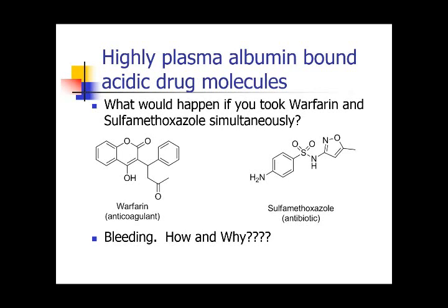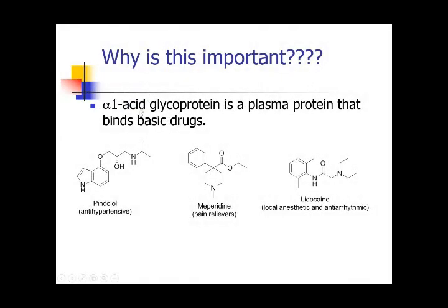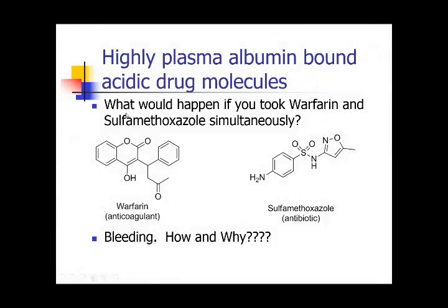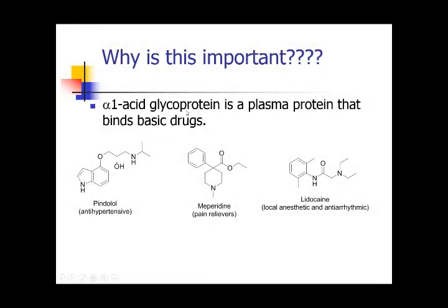Understanding functional groups — whether acidic or basic — is crucial. Remember, albumin likes hydrophobic compounds and also acidic functional groups. On the opposite end, you have alpha-1 acid glycoproteins, which tend to bind basic functional groups. So drugs containing a basic functional group — for example, antihypertensives with secondary or tertiary amines, or lidocaine with a secondary amine — are transported by this protein. You have proteins that transport molecules throughout the body that are specific to acids and bases, so combination therapy can produce unwanted interactions.